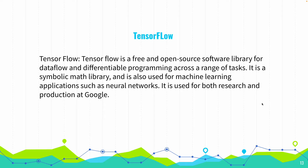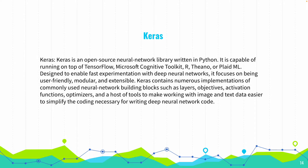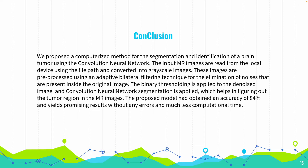TensorFlow is a free and open source library for data flow and differentiable programming across a range of tasks. It is a symbolic math library also used for machine learning applications such as neural networks. Keras is an open source neural network library written in Python, capable of running on top of TensorFlow, Microsoft Cognitive Toolkit, R, and Theano. Keras and TensorFlow are interconnected — when you run 'pip install tensorflow', Keras will come automatically.